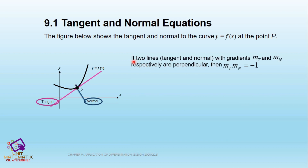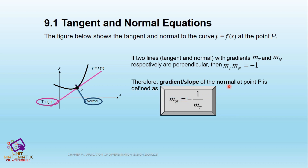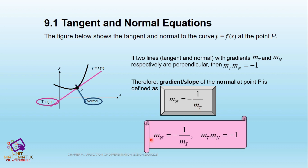The two lines — tangent and normal — with gradients mt and mn (where n stands for normal) are perpendicular. This means that at point P where the tangent and normal meet, the angle is 90 degrees, so mt × mn = -1. Therefore, the gradient of the normal at point P is defined as mn = -1/mt.